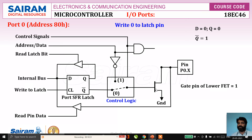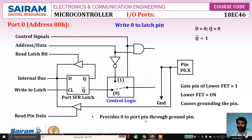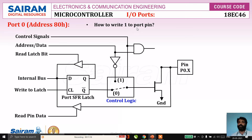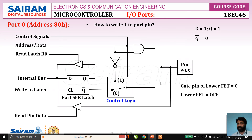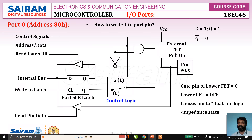To write a logic one to the port pin, we set D = 1, making Q = 1 and Q-bar = 0. Q-bar = 0 at the lower FET gate turns it off — an open circuit — so the pin enters a floating high-impedance state. This is why an external pull-up resistor is needed to supply logic one to the port pin when it is used as an output.